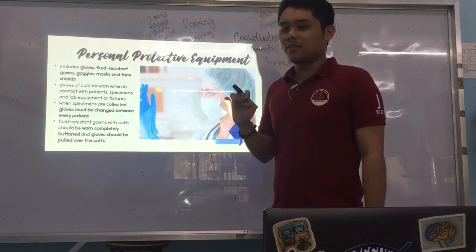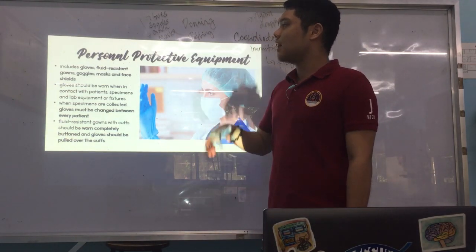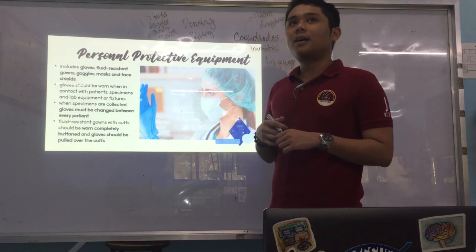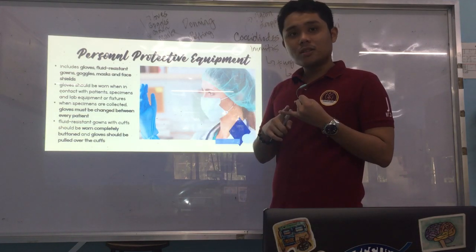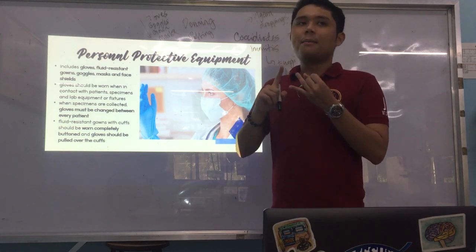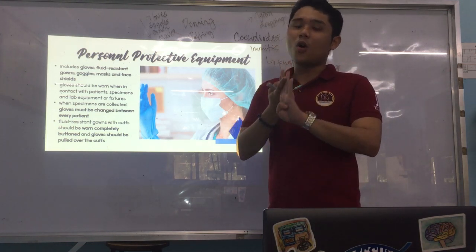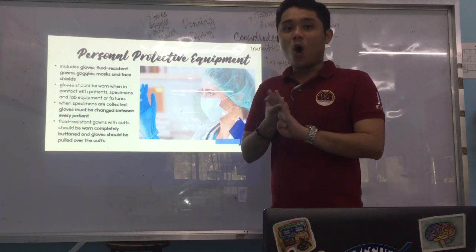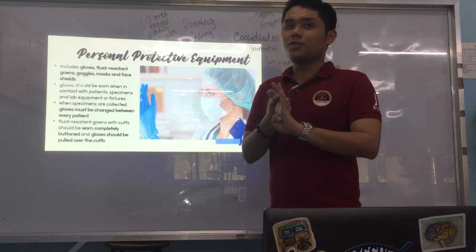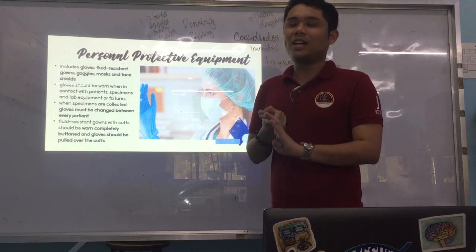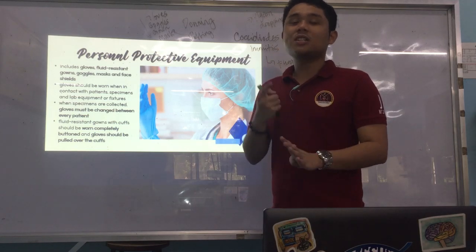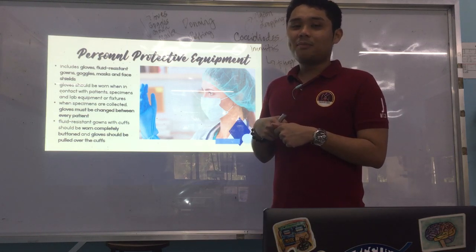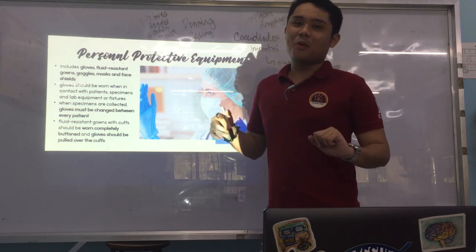There was a board exam question asking: which of the following is NOT a PPE? The choices were goggles, mask, N95 filter, and alcohol. The answer is alcohol. N95 filter — also known as a HEPA filter — is found in the N95 mask, so it can be considered a PPE. Alcohol is not classified as a PPE.